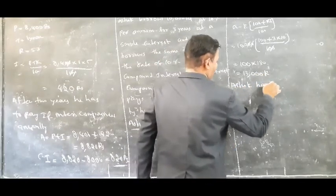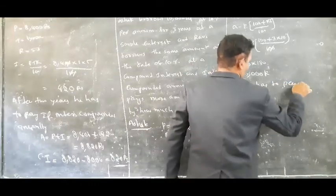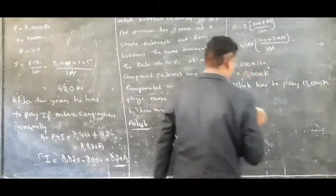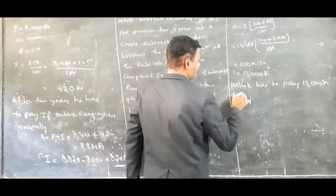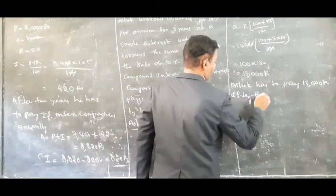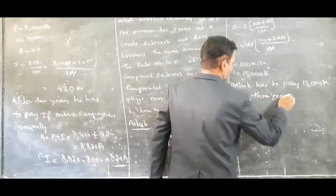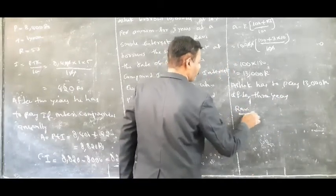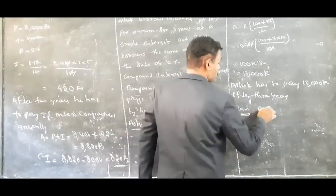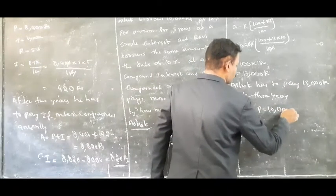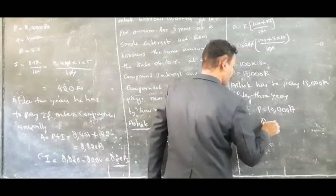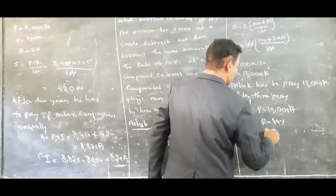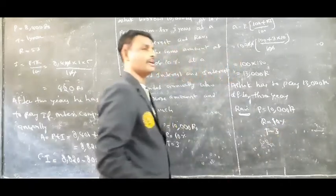Ashok has to pay 13,000 rupees after three years. Now I am going to take the amount of Ravi. Principal amount of Ravi is also 10,000 rupees, and rate of interest is also 10%. Time duration is three years, but it is compound interest.